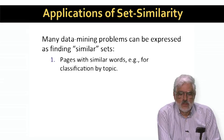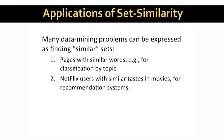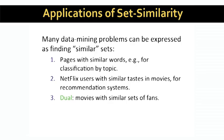For example, we can view web pages as the set of words they contain. If two pages have similar sets of words, we might expect them to be about the same topic. For another example, imagine a matrix of Netflix users where the rows correspond to the users and the columns to the movies. The entry for a given user and movie is the rating that the user has given the movie, blank if no rating. We might see a user as the set of movies they have rated four or five — that is, movies they like. Two users who have similar sets of liked movies probably have the same tastes, and Netflix can use the movies one user liked to recommend movies to the other. We can use the same idea backwards, where we think of a movie as the set of users who liked that movie. Movies with similar sets of users can be expected to belong to the same genre.